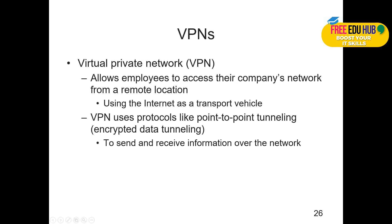A virtual private network allows employees to access their company's network from a remote location. Using the internet as a transport vehicle, VPN accesses protocols like point-to-point tunneling and encryption to send and receive information. It could be through Cisco, point-to-point, or a third-party tool. IPsec — internet protocol security — is usually used to communicate between two different networks, configured using encryption keys so that communication between your computer and the remote computer remains 100% secure.